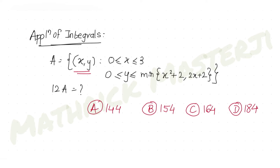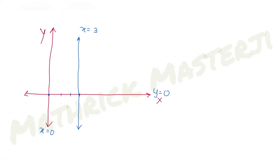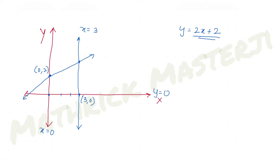Now the important part: y is less than or equal to the minimum of x squared plus 2 or 2x plus 2. Let's first plot y equals 2x plus 2. Its y-intercept is 2, so it passes through (0, 2) with positive slope. At x equals 3, y equals 2(3) plus 2 equals 8, giving the point (3, 8).